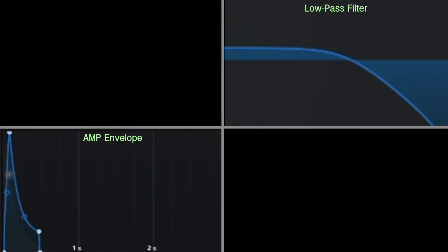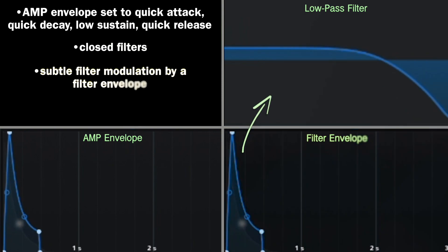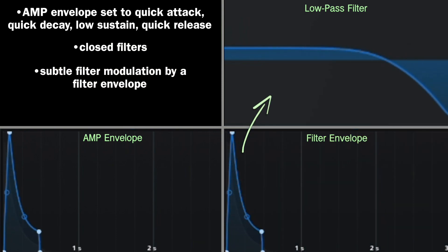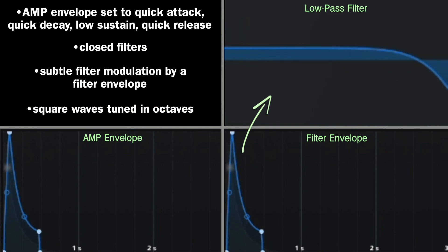Synth plucks are primarily characterized by a quick attack, a quick decay, a low sustain level, and a quick release. It's common for synth plucks to be more of a closed filter kind of sound, sometimes with an envelope opening up the filter with a quick attack. It's also common to tune one oscillator an octave up, and square waves tend to produce the pluckiest kind of timbre.